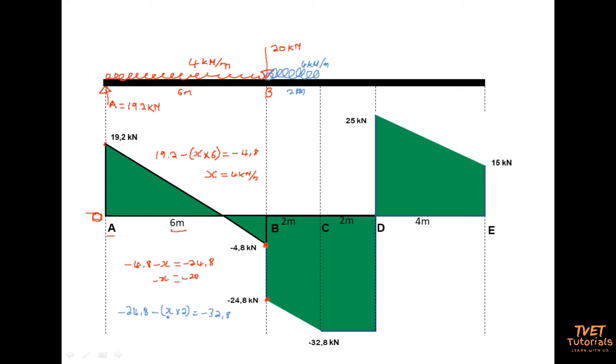We continue. Now I'm at point C. At point C I do not go up vertically. I do not go down vertically. So therefore it means that there is no point load and there is no reaction. I move to the next point, which is between C and D.